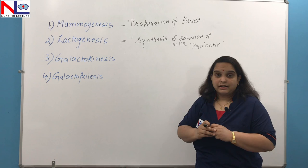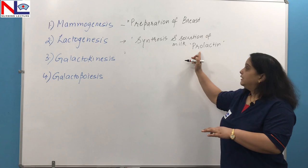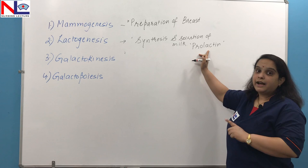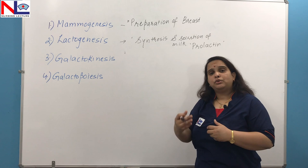What happens is that as soon as delivery takes place, the main estrogen and progesterone hormones which play an important role in pregnancy become withdrawn. As withdrawal takes place, the prolactin level rises. With this high prolactin level, milk starts synthesizing within the alveoli. This is called the lactogenesis phase.